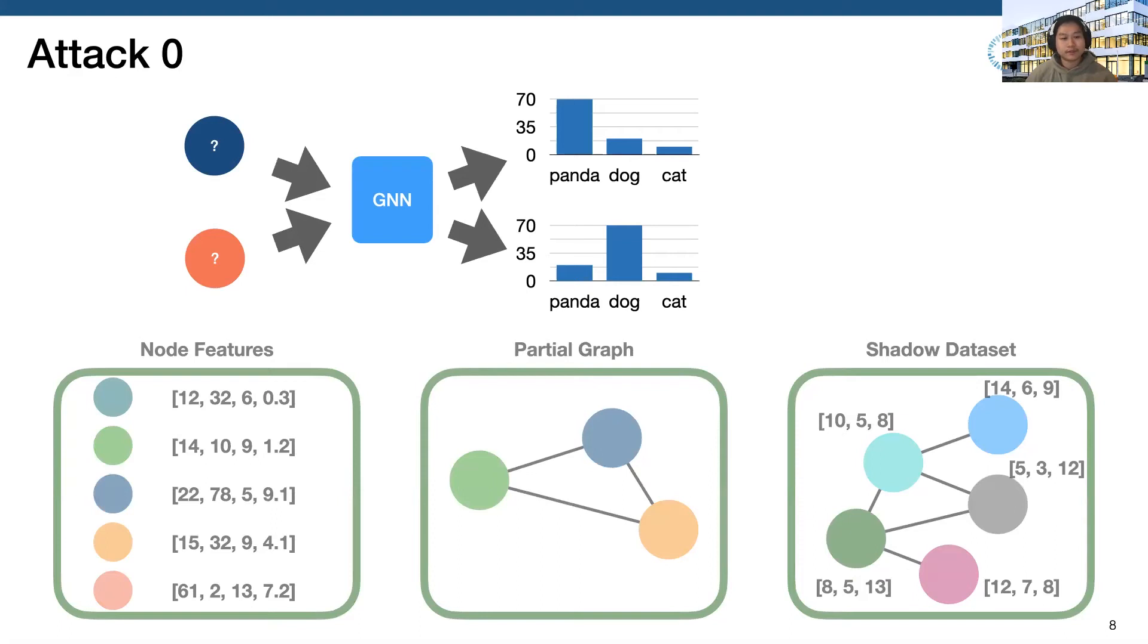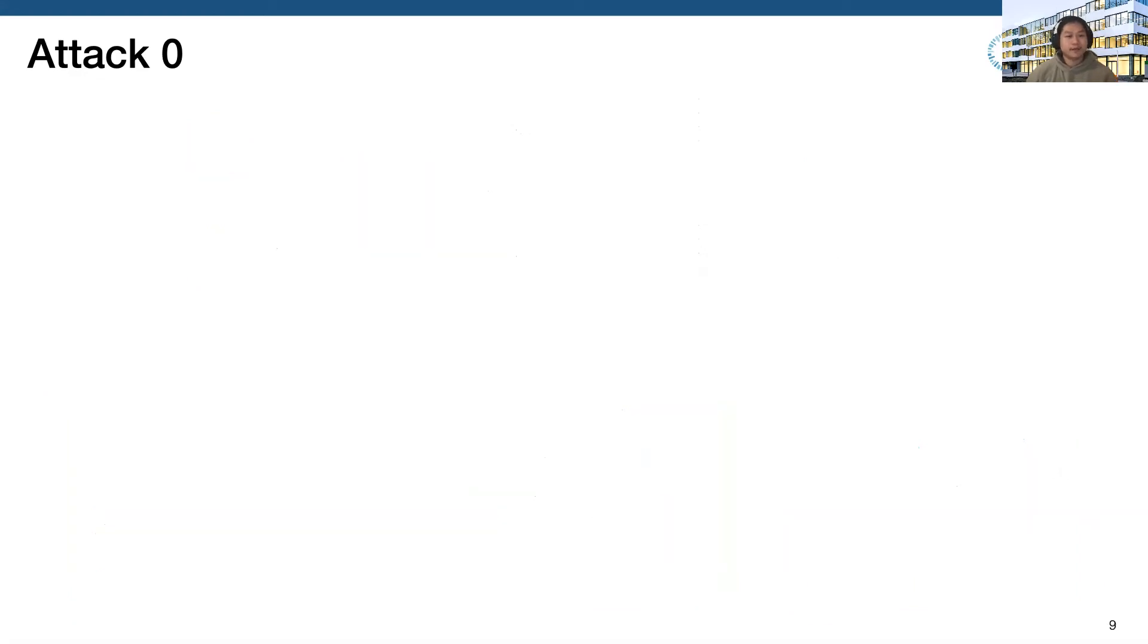Note that GNN essentially aggregates information for each node from its neighbors. This means, if there is a link between two nodes, then their posteriors obtained from the target model should be closer. In another word, closer distance means it's more likely for two nodes to be linked, or we call positive node pairs.